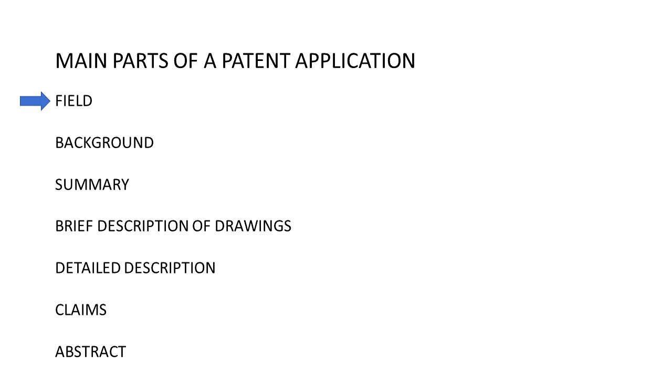Just to review, here are the key parts of a patent application: the field, which is a one or two sentence statement on the topic of the invention; a background; a summary; a brief description of the drawings, which is a sentence or so describing each drawing; a detailed description that goes into detail about what the drawings show; and the claims, which is the legalese that spells out exactly what your invention is.